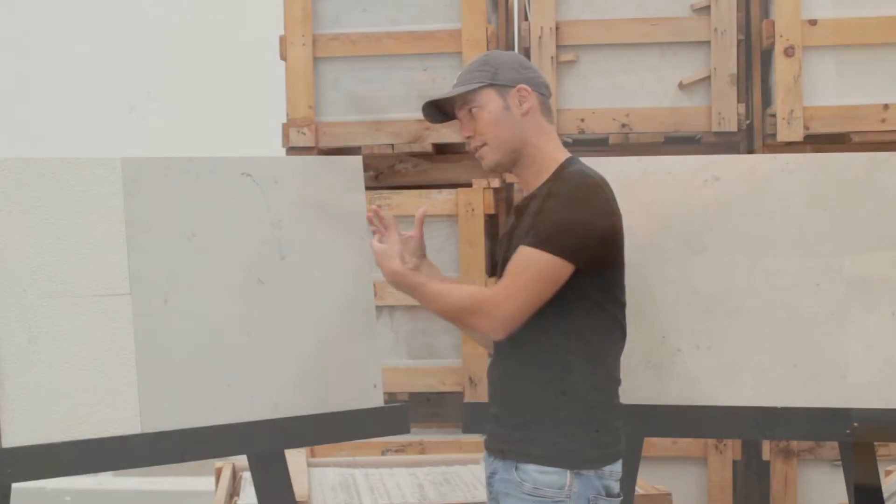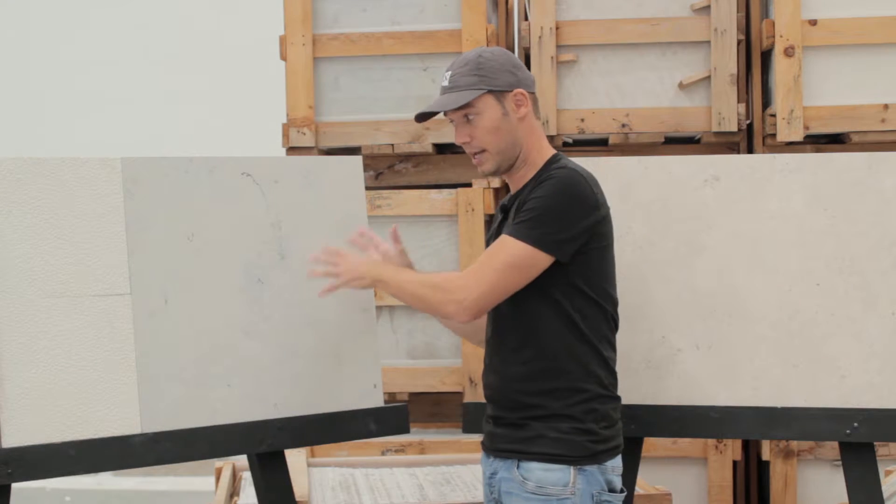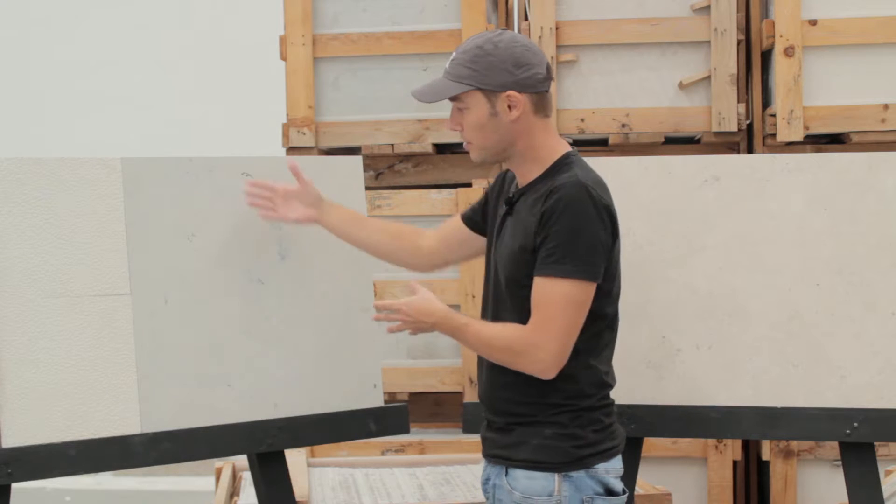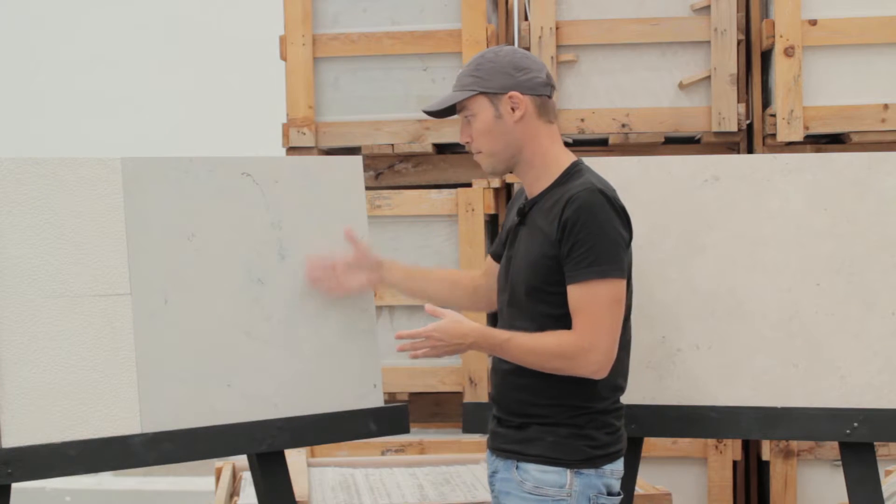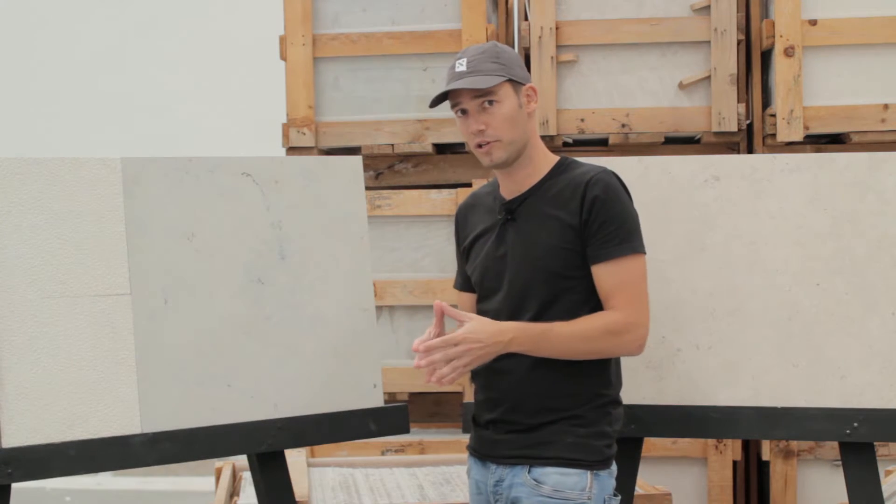This is a gray limestone, but you can hardly see the color here. Again, this is a good choice because it ages well. After a few years, you still have a bit of the same color and the same look on the stone. So that's why it's popular. It's a popular choice for cladding.